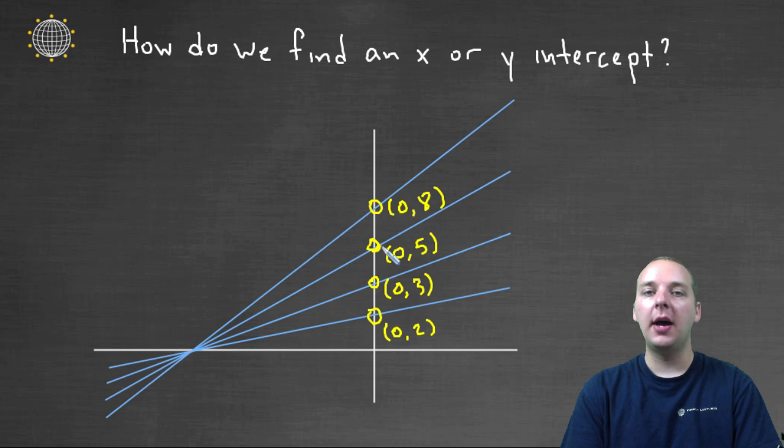And again, it doesn't really matter where they are, I'm just making up some values here. But what I want to point out is, look for something consistent for all of the y-intercepts. Regardless of which y-intercept we're looking at, do you see something consistent? What you should notice is that the x's are always zero for a y-intercept. Zero eight, zero five, zero three, and zero two. Because on the x-axis, the x would be zero for all of these places here.